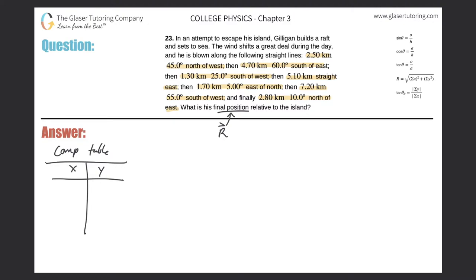Let's count how many vectors we have. V1 is the 2.5 km one, V2 is 4.7 km, V3 is 1.3 km, V4 is 5.1 km, V5 is 1.7 km, V6 is 7.2 km, and V7 is 2.8 km — seven vectors total. When we sum all the components we will get our resultant vector. We'll take each vector individually and draw it on a coordinate plane.